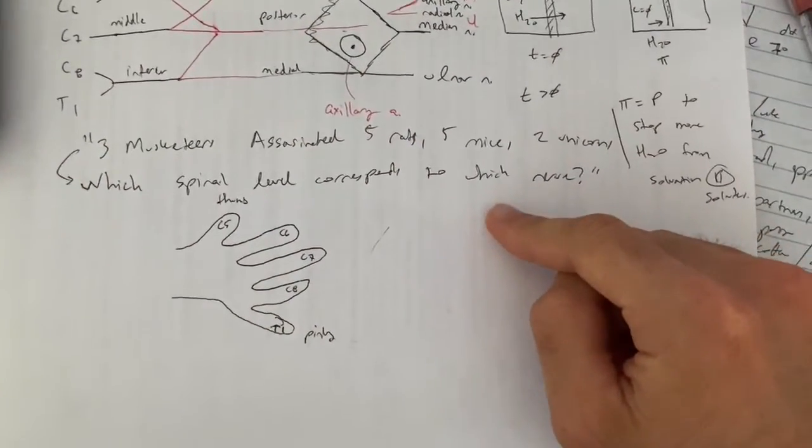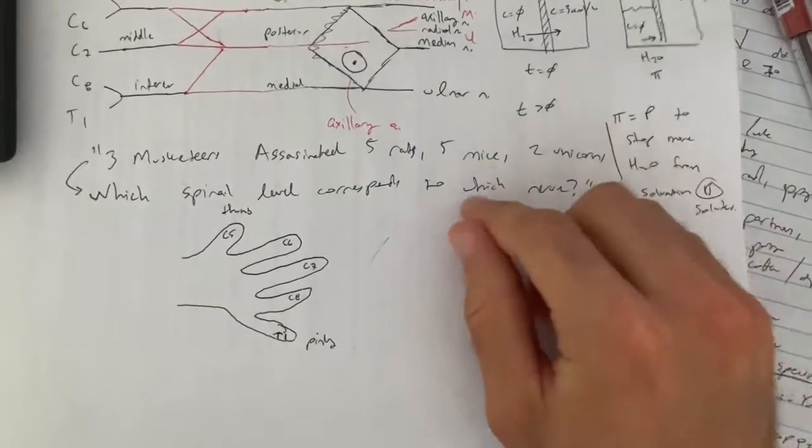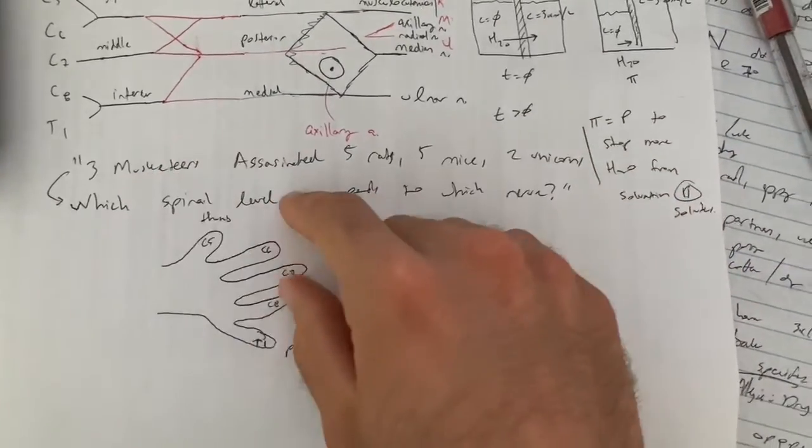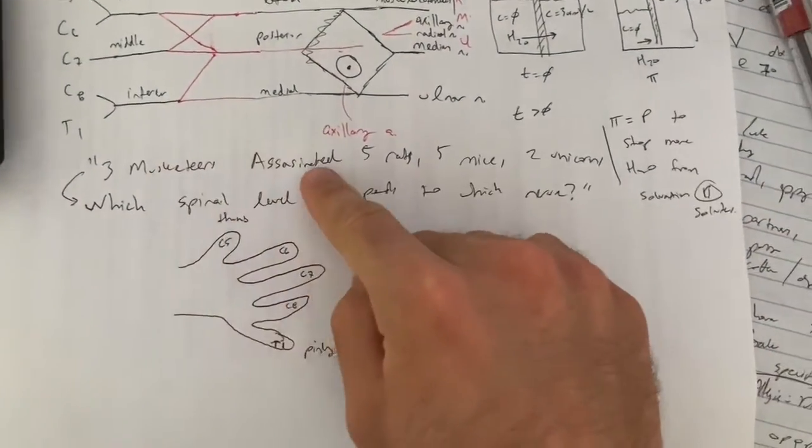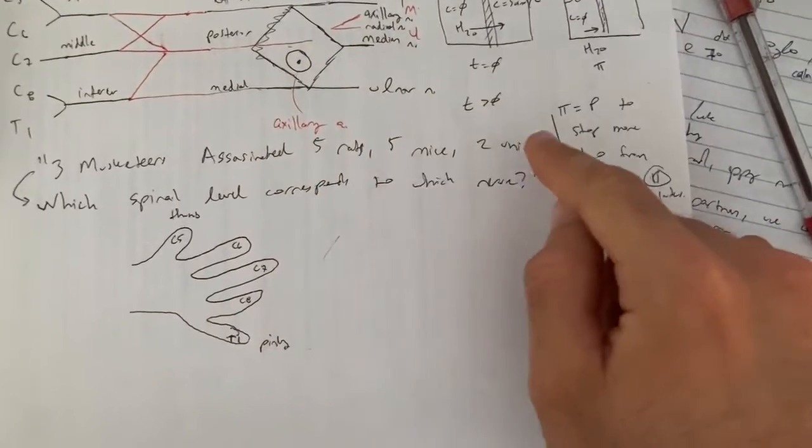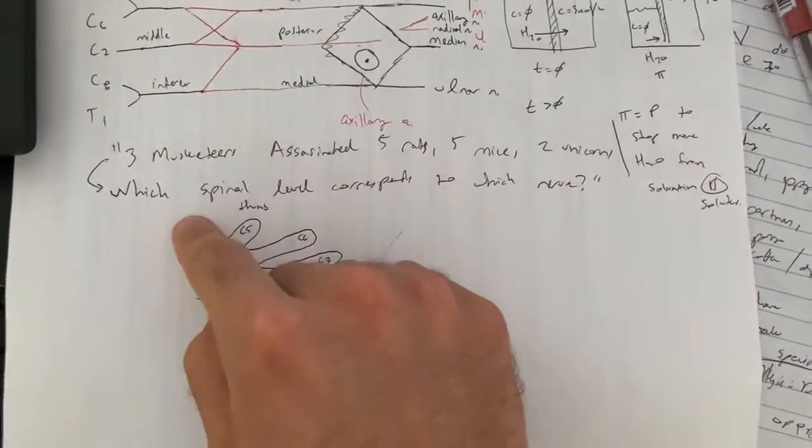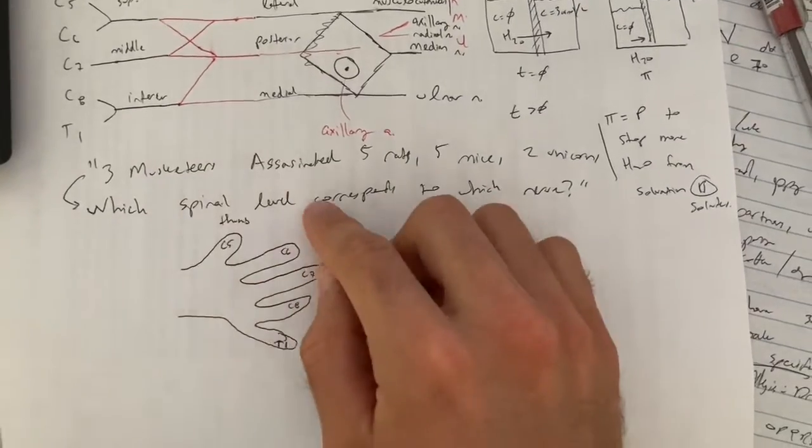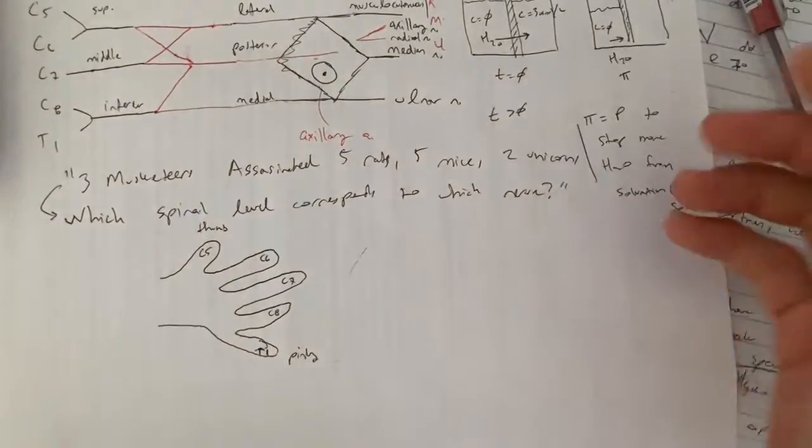This is a mnemonic that I did not create, but it's widely used. The three musketeers assassinated five rats, two mice, two unicorns. The reason we care about this mnemonic is it tells us which spinal levels correspond to which nerves or branches.